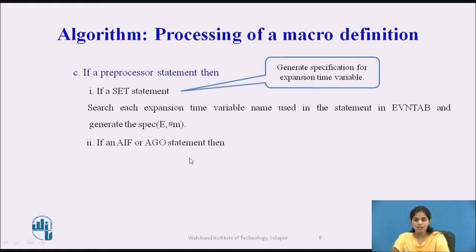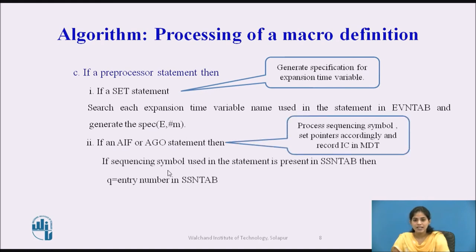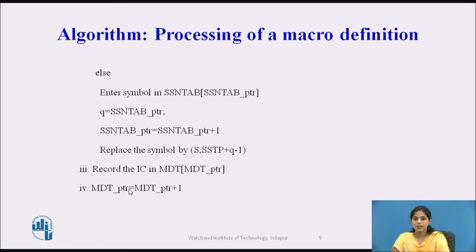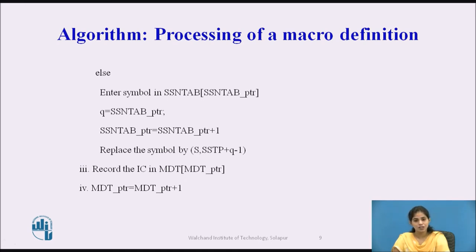For an AIF or AGO statement, we check if the sequencing symbol used in the statement is present in the SSN tab. If present, we fetch the entry number and assign it to Q. If not present, we enter the symbol in the SSN tab, fetch the entry number, assign to Q, and increment the SSN tab pointer: SSN tab pointer = SSN tab pointer + 1. We then replace the symbol with S, sequencing symbol table pointer + Q - 1, record the IC in the MDT, and increment the MDT pointer: MDT pointer = MDT pointer + 1.